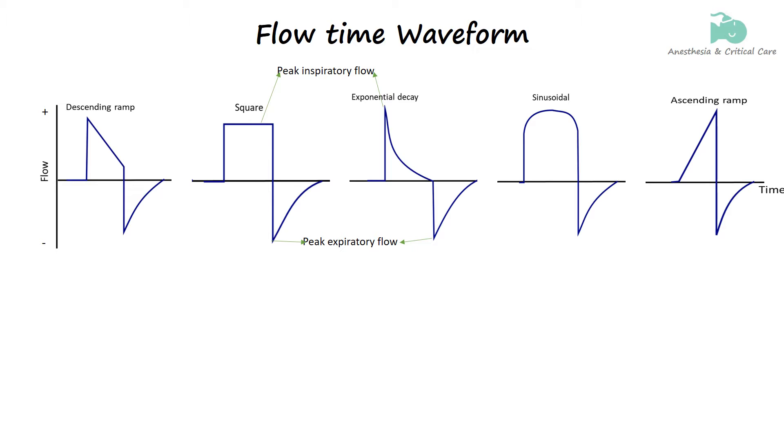When the flow is directed into the lungs during inspiration, it is plotted as a positive value on the waveform because the flow is moving in the direction of the ventilator towards the patient.